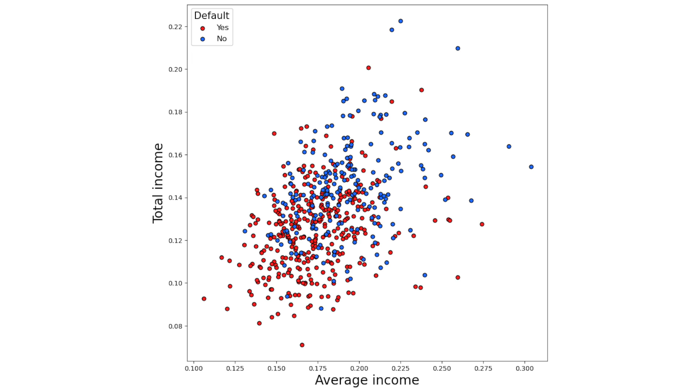We could consider including the first PC in our shortlist. This may be more predictive than any of the individual income features. However, we may still only include the simple aggregations of income in our shortlist. This is because the relationship between default and total income is easier to understand and explain than one with a PC.